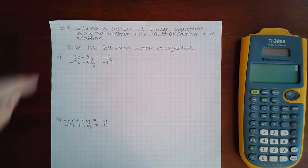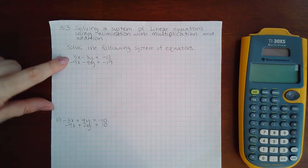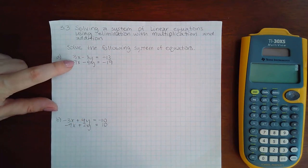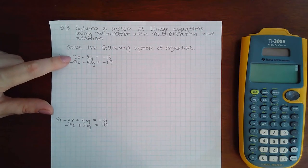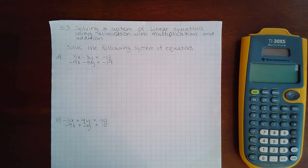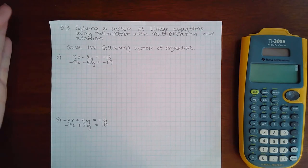For instance, this example, if I wanted to eliminate the three, I would have to make this coefficient match. This one's already positive and that one's already negative, so all I need is for the numbers to match. What could I multiply by and who would I multiply it by to make them have the same coefficient?